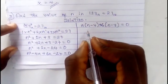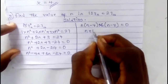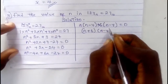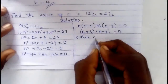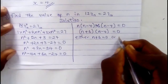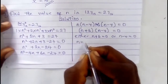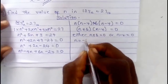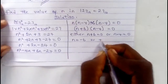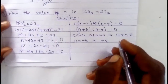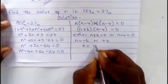Equating each factor to zero: either n plus 6 equals 0, giving n equals minus 6, or n minus 4 equals 0, giving n equals plus 4. In number base, we are not looking for a negative answer — we are looking for a positive answer. So our answer is n equals 4.